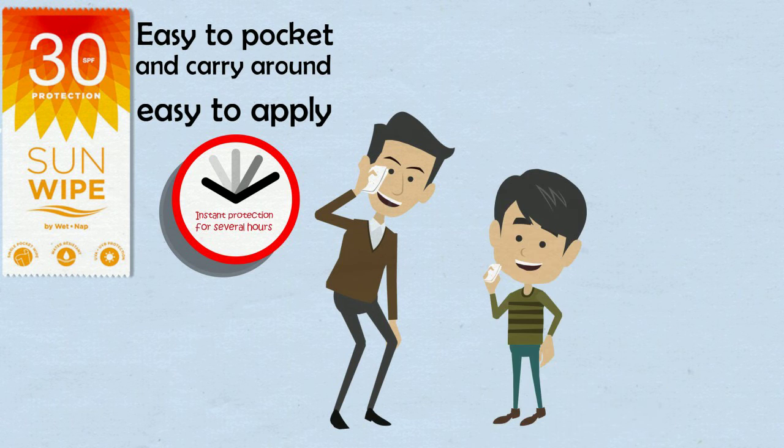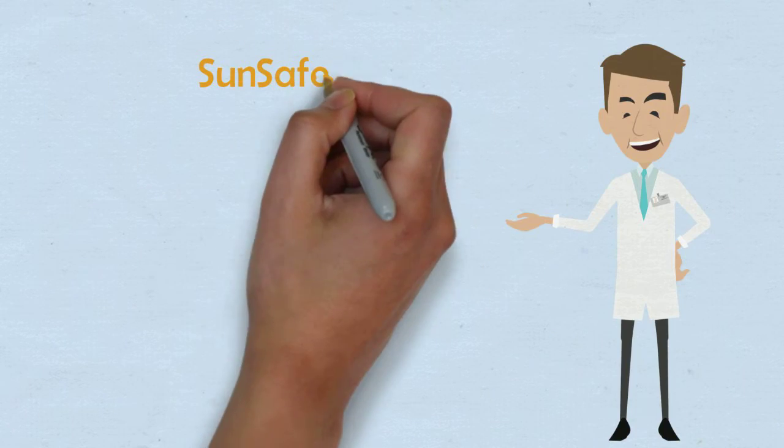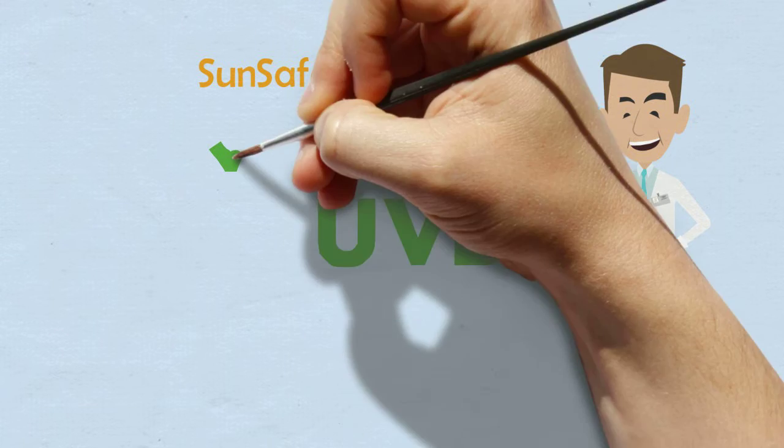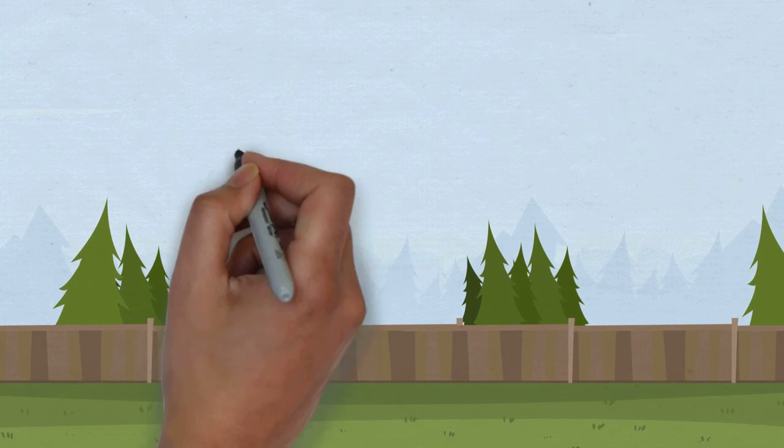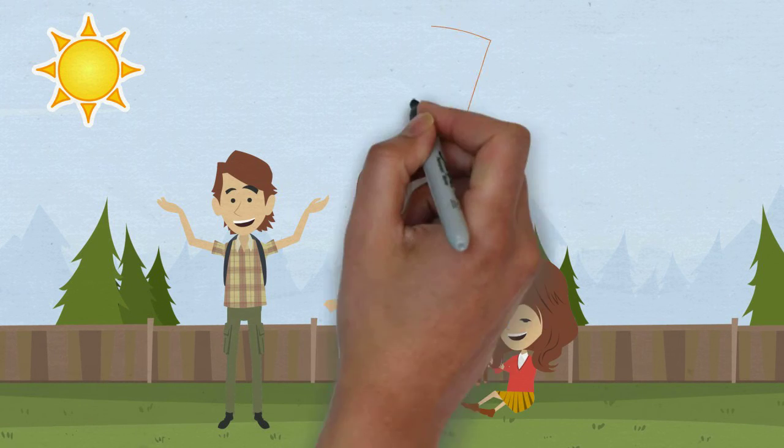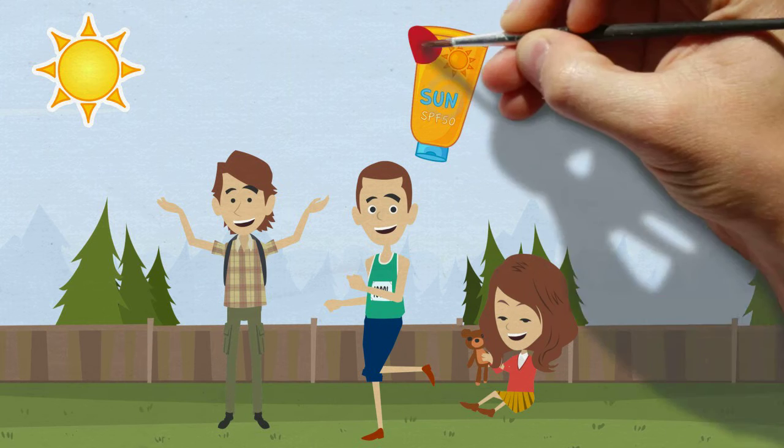Even your kids can simply apply it by themselves. SunSafe provides UVA and UVB protection and is EU compliant, so you can feel confident to enjoy your favorite activities under the sun and stop worrying about carrying around a bulky sun cream bottle.